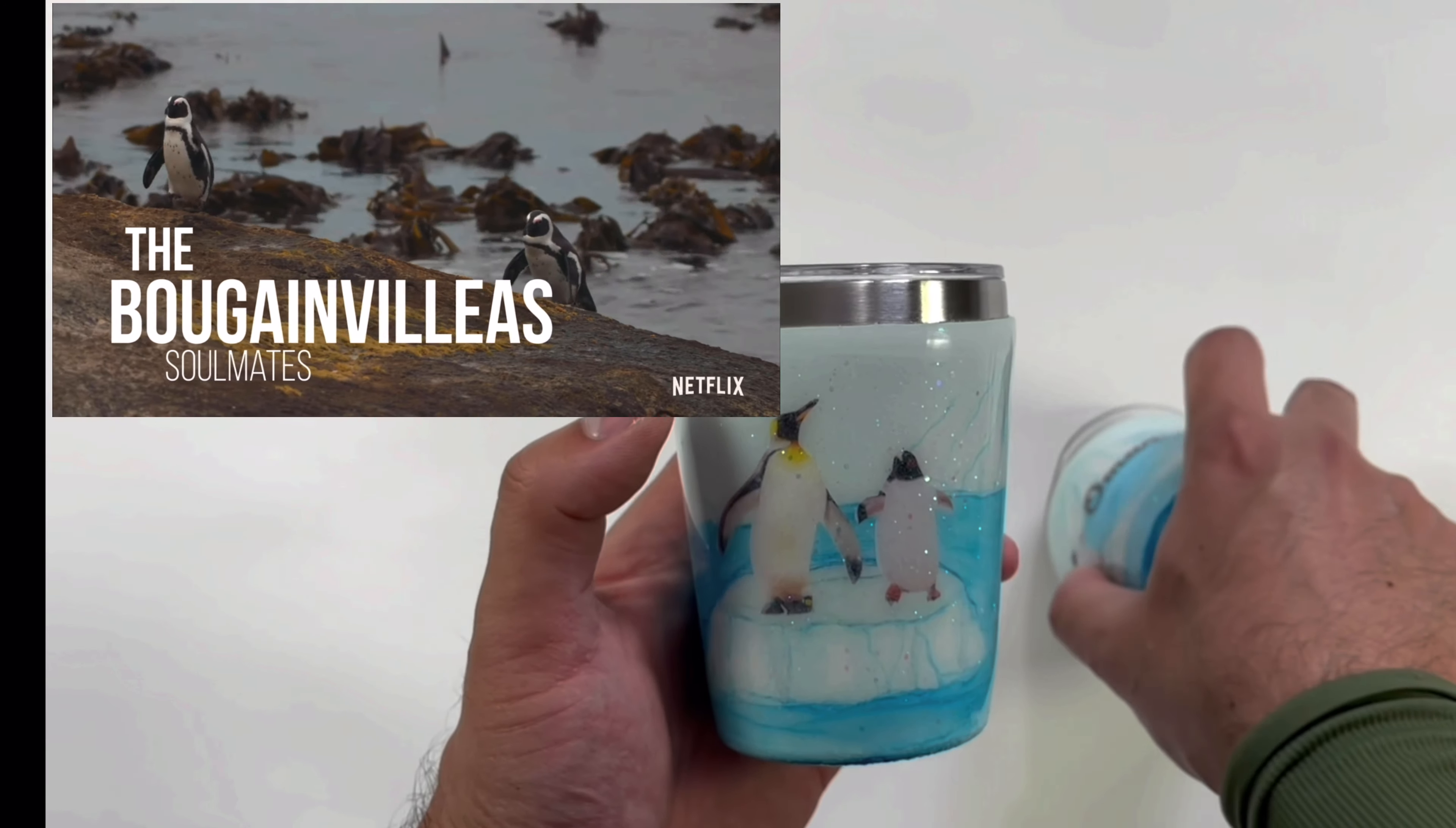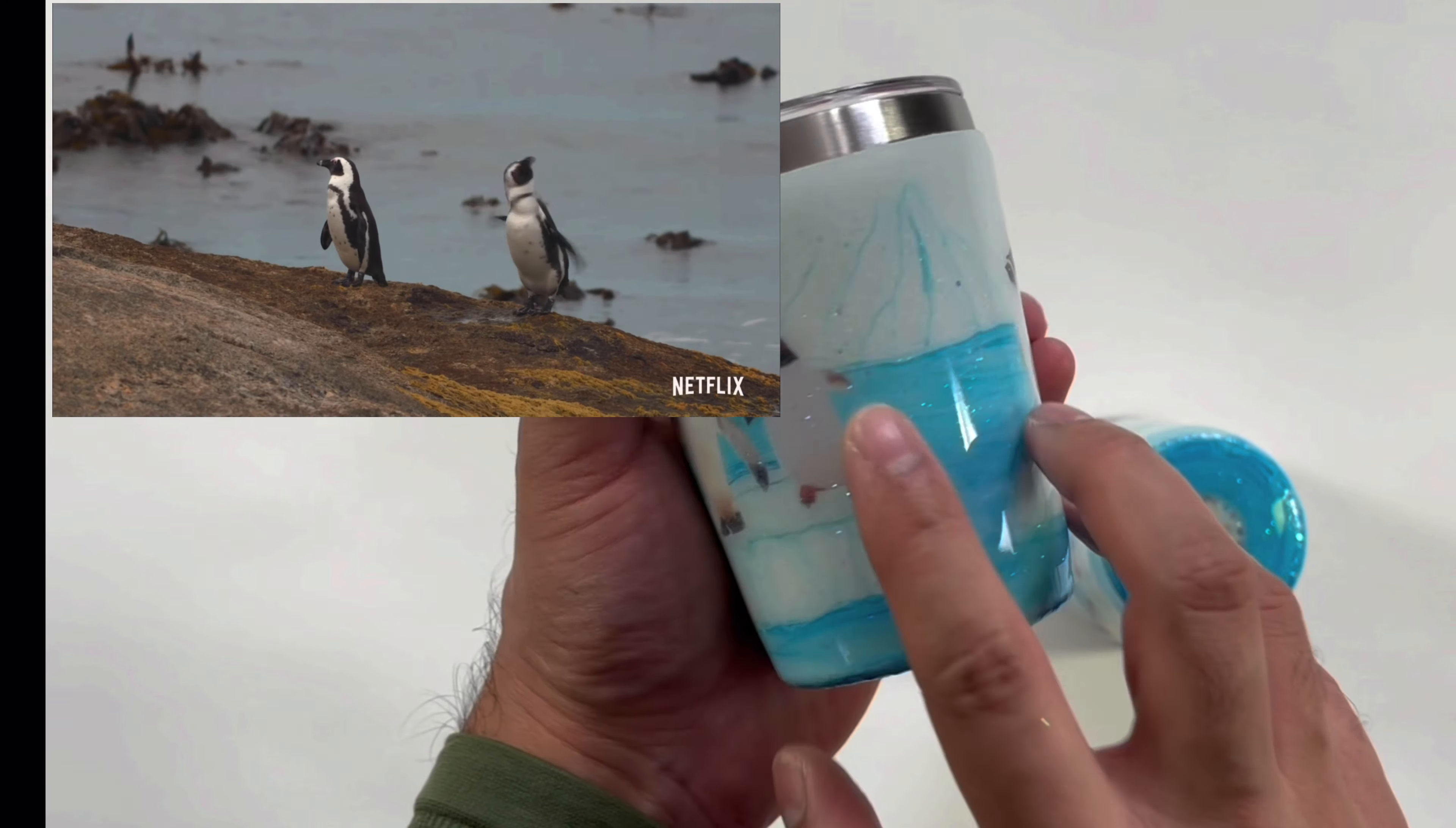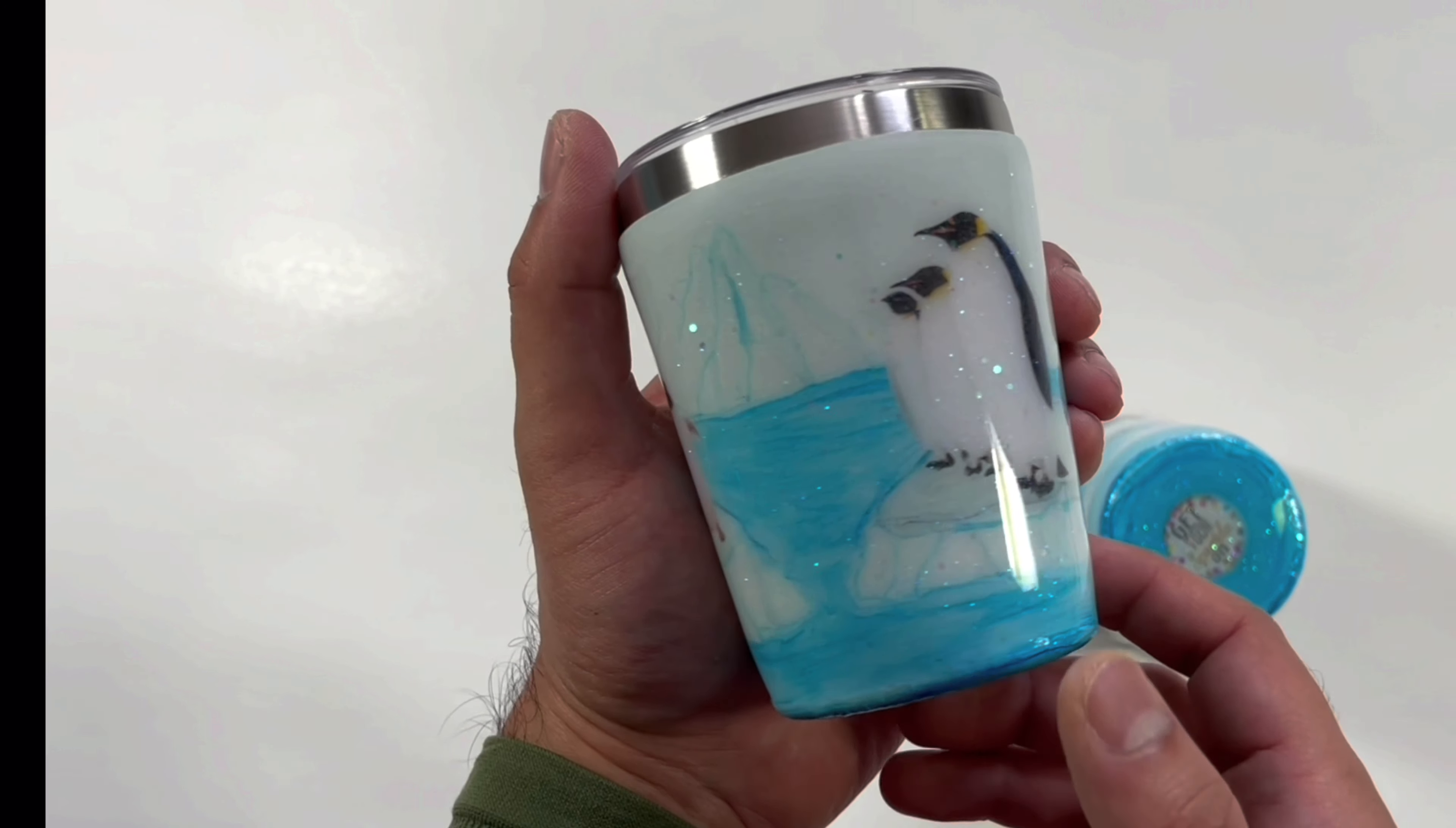These are basically two penguins, a father and a son named Twig. And these three penguins on the other island are basically bullies, the car park gang that harasses the Bougainvilleas.